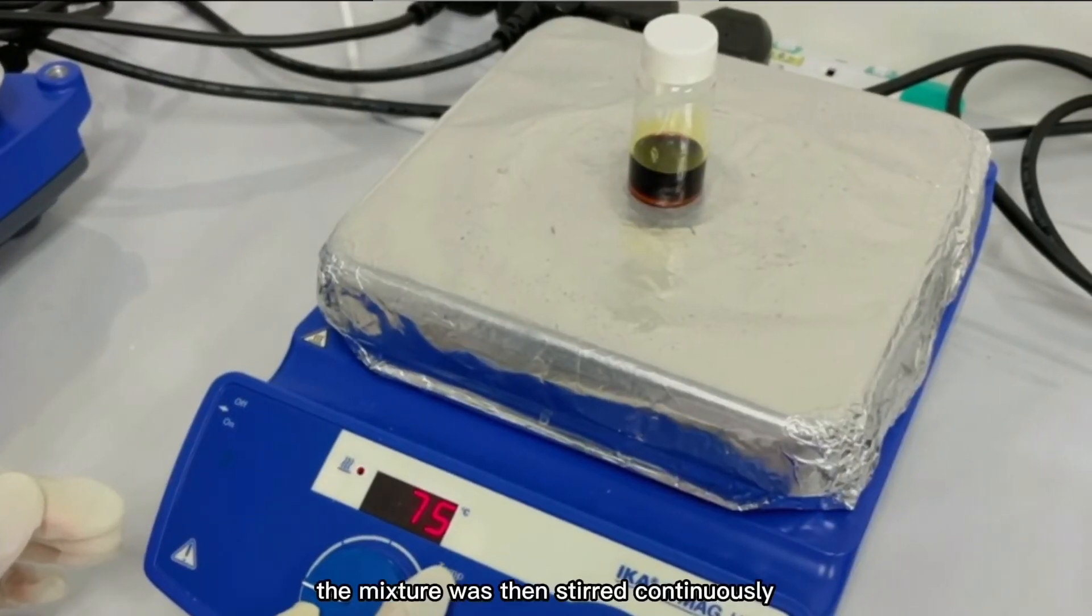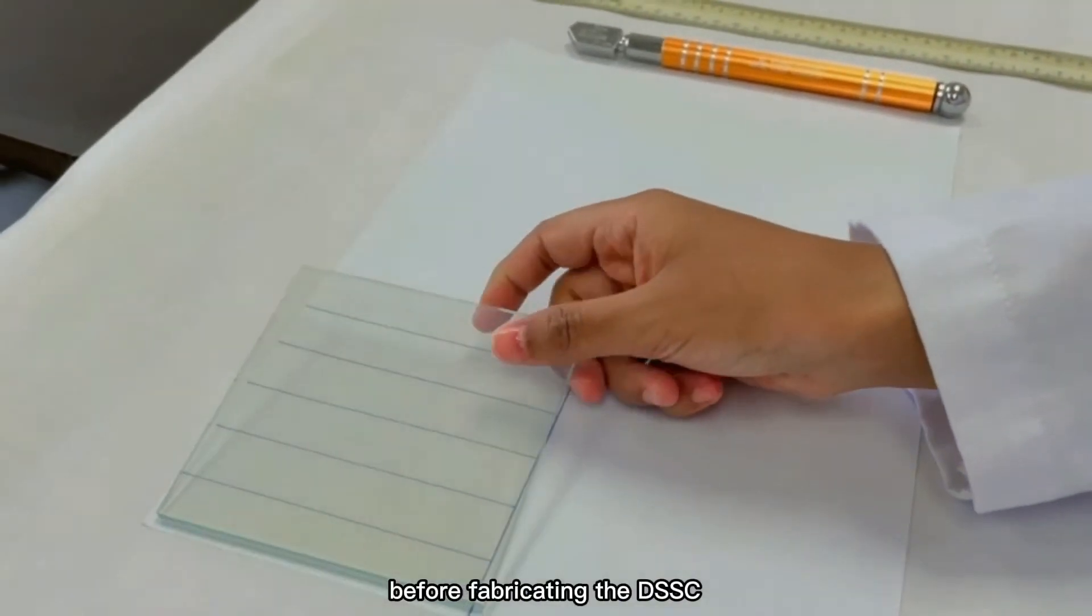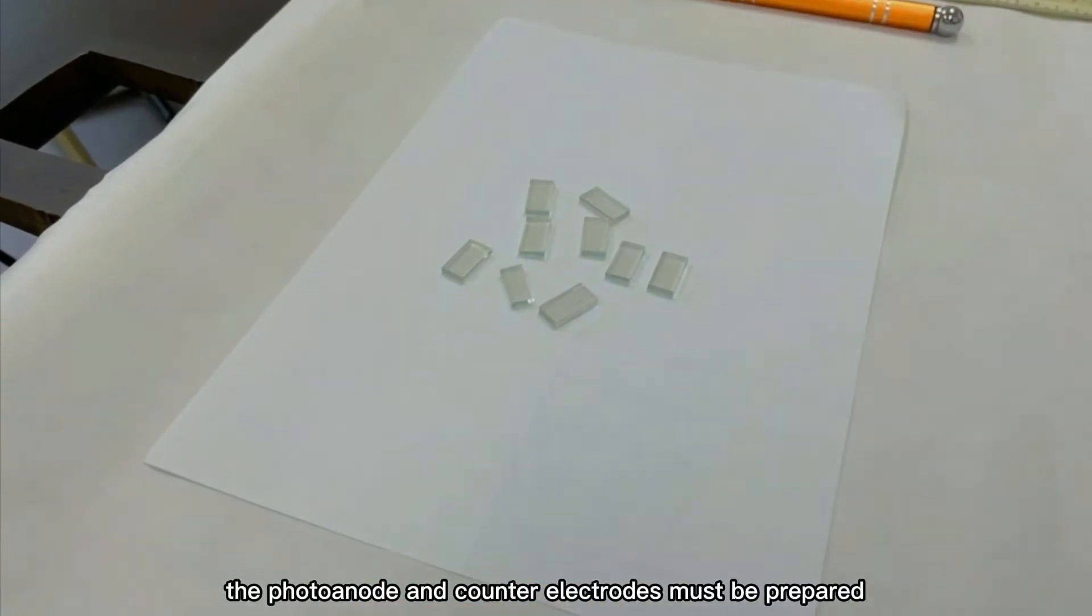The mixture was then stirred continuously at 80 degrees Celsius for 4 hours. Before fabricating the DSSC, the photoanode and counter electrodes must be prepared.